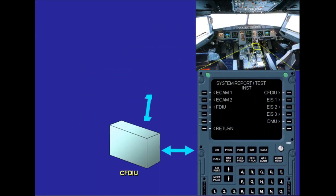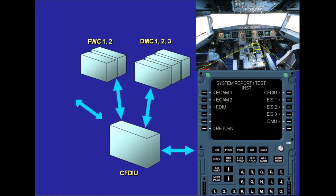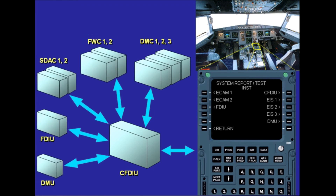Using the MCDU, you can have access to the CFDS fault messages of all the indicating and recording systems. Specific BITE tests are available as well. ECAM-1 gives access to FWC-1, FWC-2, SDAC-1, SDAC-2, and ECAM-CP. ECAM-2 gives access to FWC-1, FWC-2, SDAC-1, SDAC-2, and ECAM-CP.